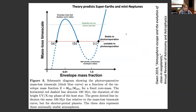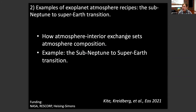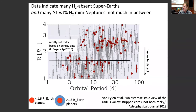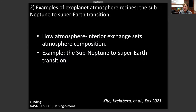I now want to talk more about the sub-Neptune to super-Earth transition as an example of how you make an exoplanet's atmosphere. A key to understanding atmospheric composition is understanding exchanges between the planet's atmosphere and interior during formation and evolution. The picture I just described has a sort of thermally and chemically inert magma underlying the hydrogen — but that's not right. It's magma, so it's not thermally inert, and it's also going to chemically react with the hydrogen. So what happens when we include these factors? That'll be the focus of most of the rest of the talk.